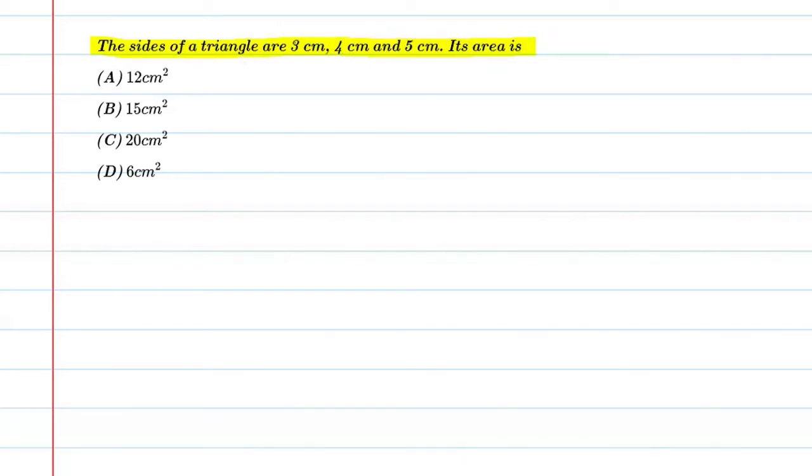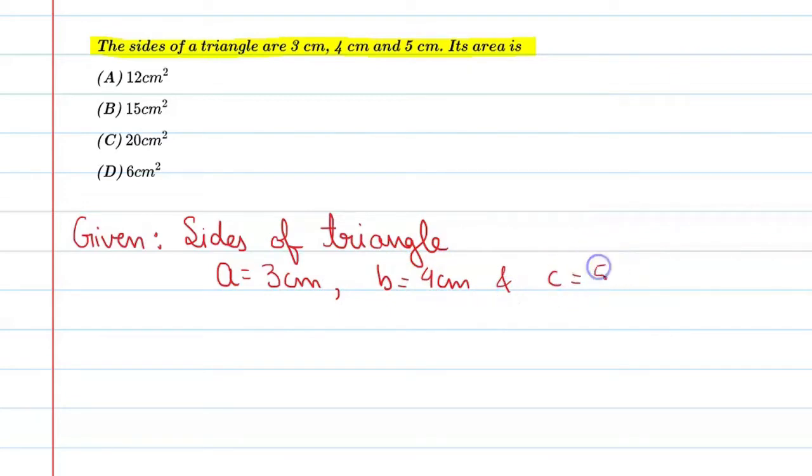Let's start this question. First we will write our given. Given is side of triangles. The sides of a triangle are 3 cm. The second side is B, which is 4 cm. The third side is C, which is equal to 5 cm.